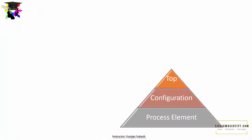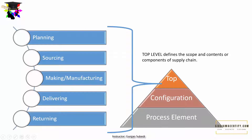This model defines the three elements of supply chain management. They are the top level, configuration, and process element. The top level contains components of the supply chain. In the next lecture, we will be studying about the components of the supply chain. There are basically five components of the supply chain which we will be studying in the next chapter.